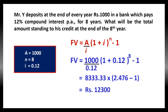We have already studied that 1000 received in the first year is not the same as 1000 received at the end of the 8th year. Hence, even though he is depositing 8000 rupees, he is getting 12,300 rupees at the end of the 8th year. This is because of the effect of compounding.